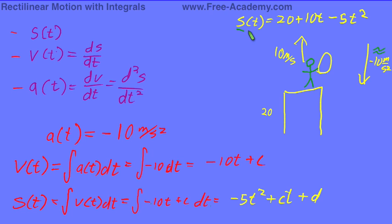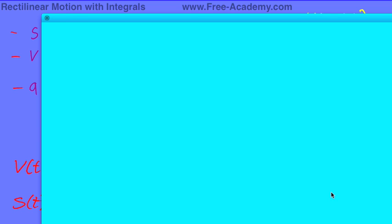The equation we had for this was s of t equals 20 plus 10t minus 5t squared. And I would like to point out to you that negative 5t squared is in our equation, our 10t is our ct, and our 20 is our d. So we get the exact same equation back out as we put back in, which is exactly what we wanted considering integrals are the reverse of derivatives.